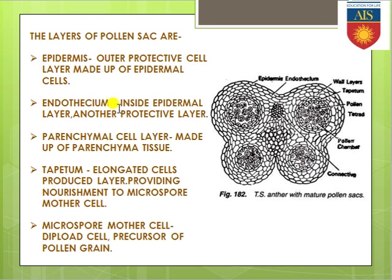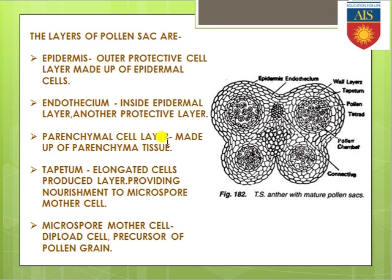Keep it in mind that endothesium is also a protective layer, like the epidermis, and it is made up of endodermal cells — just as epidermis is made up of epidermal cells, endothesium is made up of endodermal cells. These epidermal and endodermal cells are also present in the root. Next, the parenchymal cell layer.